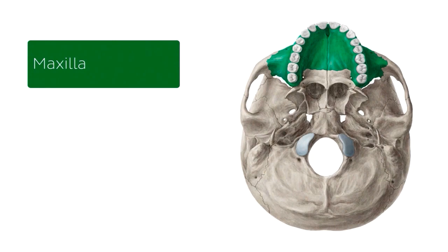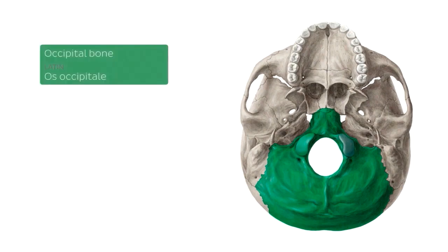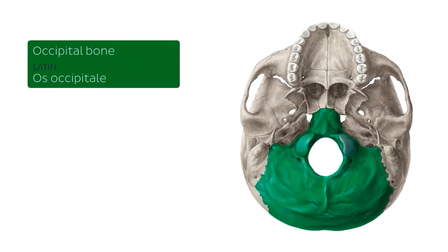The next bone in line is going to be this one here, occupying most of the area of the inferior view of the base of the skull. This is known as the occipital bone, and this is an unpaired bone covering the back of your head. It is convex externally, as you can clearly see here on this image. But if you were to look at the superior view of the base of the skull — looking at the inside of the base — we could see that this bone is then concave.